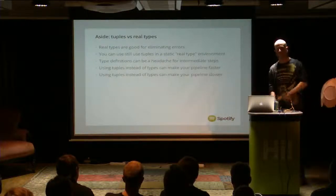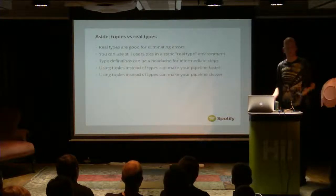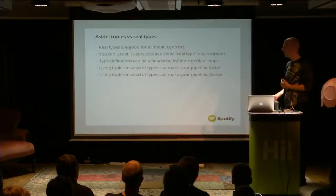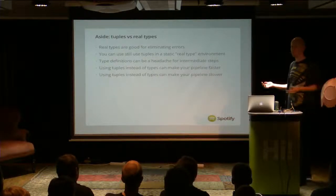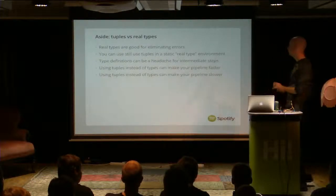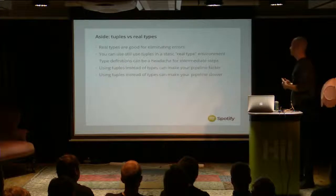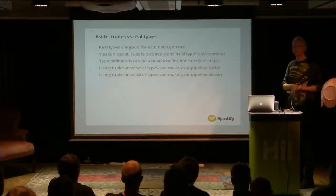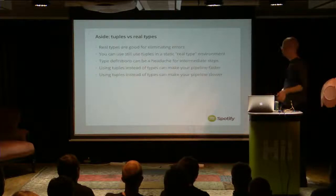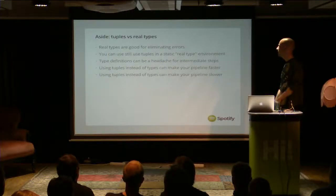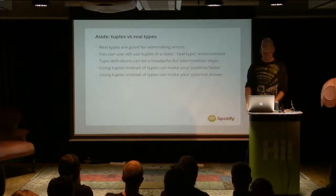Tuples can make pipelines faster because your optimizers can say 'I don't need those fields later, I'll discard them now.' Whereas with real types, you have a guarantee of having that type available later, so you can't throw away fields because the optimizer doesn't know what a field is — it's just a type. But tuples can also make things slower because you're looking things up in dictionaries all the time. In theory, with a compiled statically typed system like a C++ program, you could have zero overhead for tuple lookups.